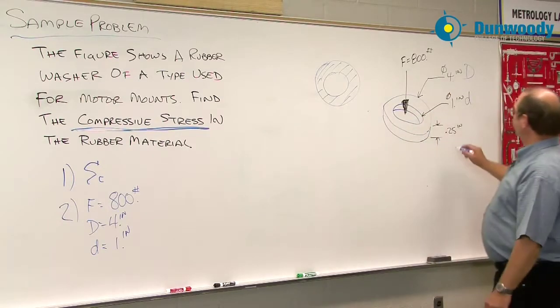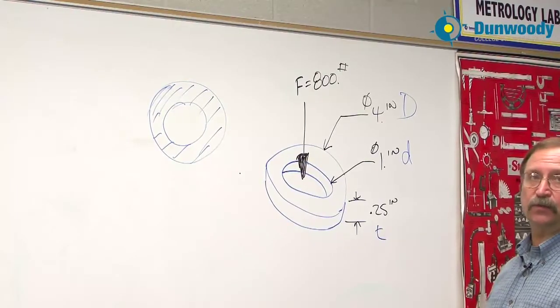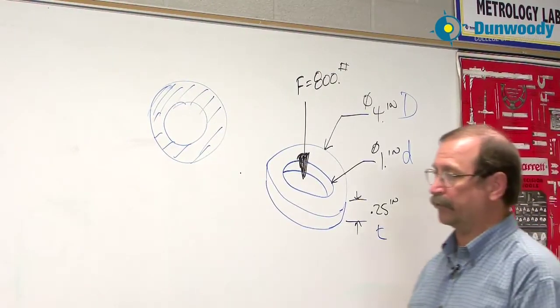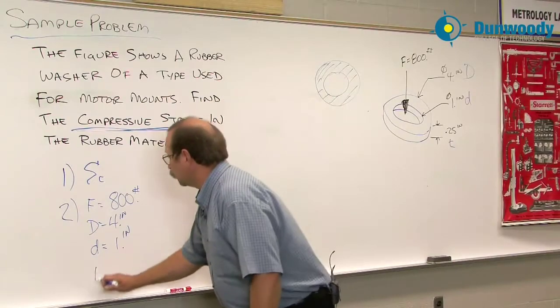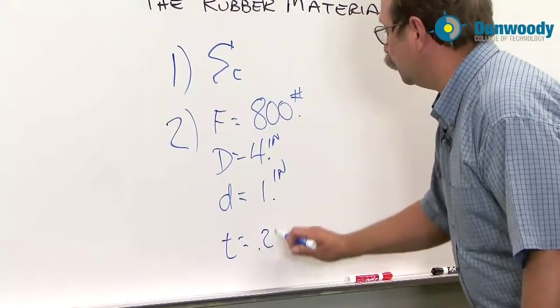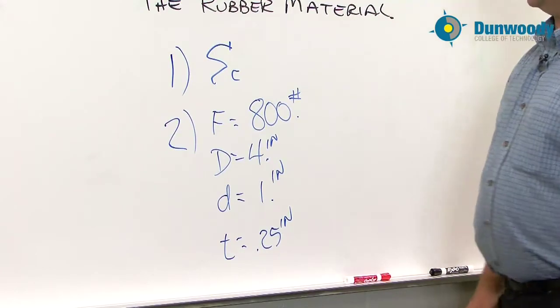The last variable that we have is actually the material thickness, which is .25 a quarter of an inch. So little t is equal to .25 inches in this case.